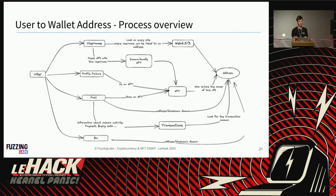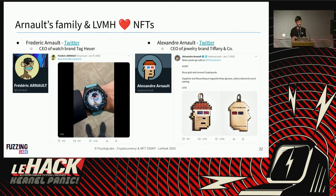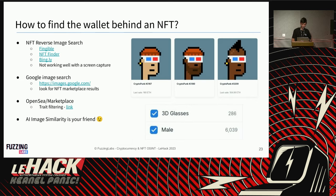We couldn't directly investigate Bernard Arnault since he isn't very active, but two of his sons are invested in the NFT space: Frédéric Arnault on the left owns a Bored Ape, and Alexandre Arnault on the right owns a CryptoPunk. We went on the blockchain to find the addresses owning those NFTs using tools like Google Image Search, OpenSea marketplace filtering by traits, or AI image similarity.